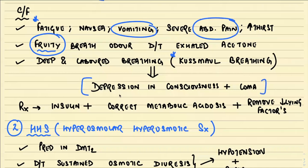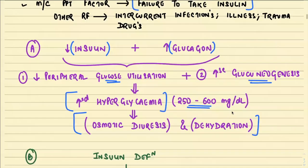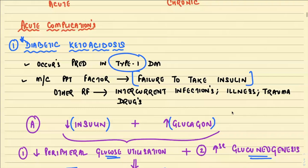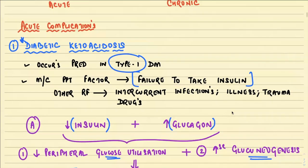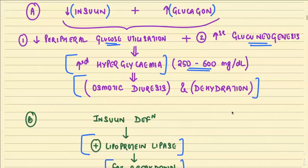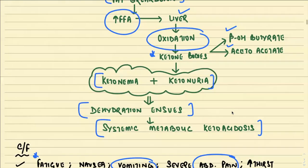The basic treatment of diabetic ketoacidosis is to give insulin to correct the metabolic acidosis and to remove or correct the underlying precipitating factors. This first important acute complication is seen mainly in type 1 diabetes mellitus.